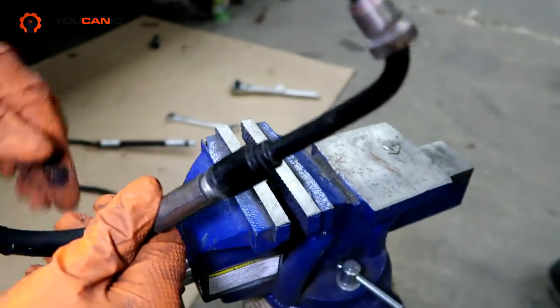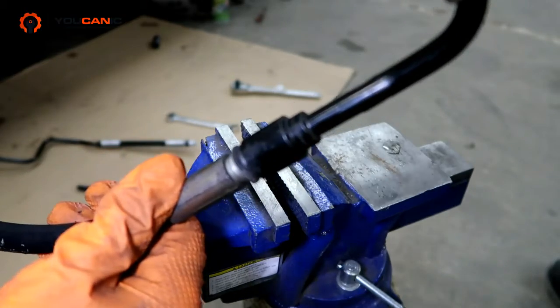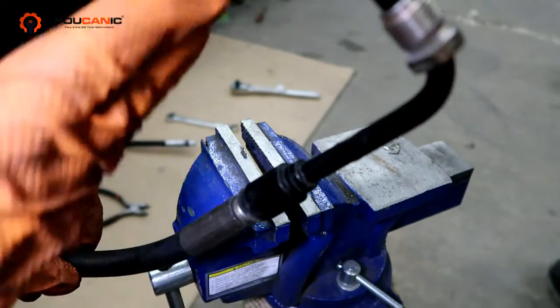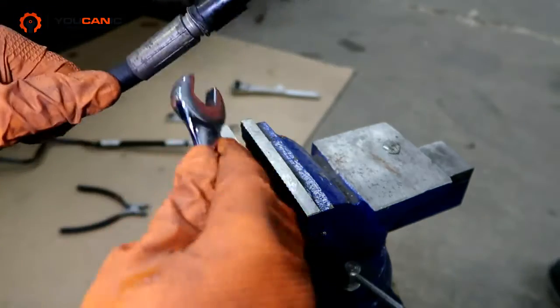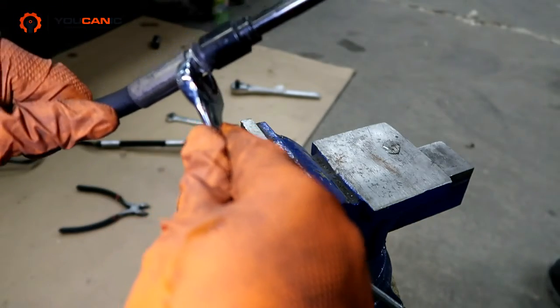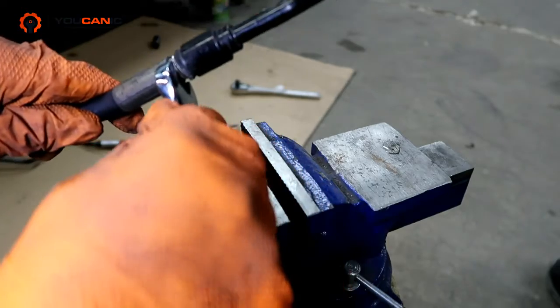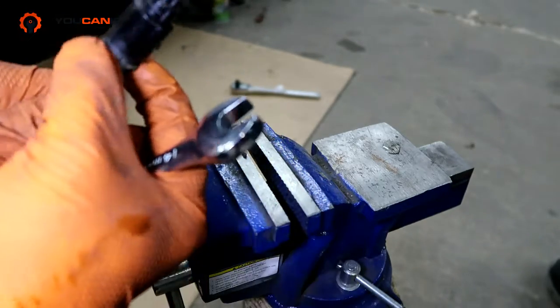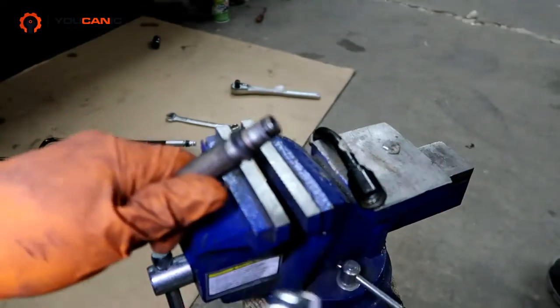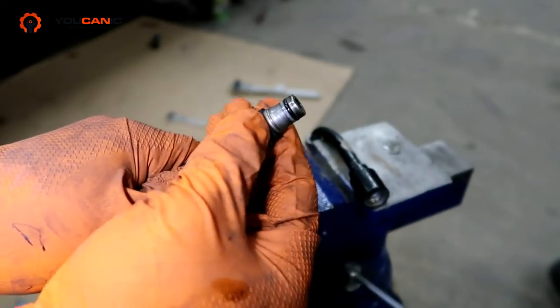Some people take a 14 millimeter wrench and then they grind this down so they make this thinner in order to come in right there. Then once you come in with the tool right there, what you'll do is you'll press the sleeve up. We have this disconnected here, but you'd press this up.